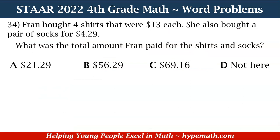Fran bought four shirts that were $13 each. She also bought a pair of socks for $4.29. What was the total amount Fran paid for the shirts and socks? Is it A: $21.29, B: $56.29, C: $69.16, or D: not here?